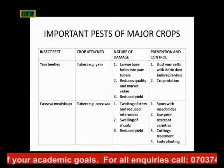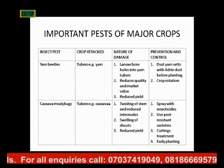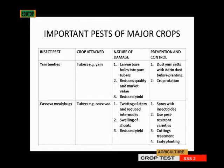Yam beetles bore into the yam tuber, reduce the quality and the market value of the yam, then they reduce the yield. How do you prevent and control yam beetles? Dust the yam set with aldrin dust before planting. The yam set is the part of the yam that you plant, so you dust it with aldrin dust before you plant it, then do crop rotation.